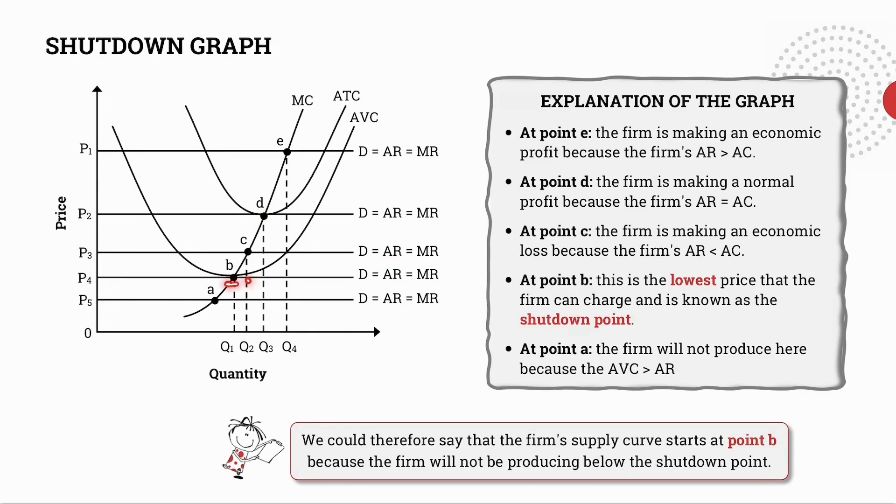At point B this is the lowest price that the firm can charge and this Grade 12s is also known as my shutdown point. It occurs where my marginal cost curve intersects with my average variable cost curve which is of course at point B.